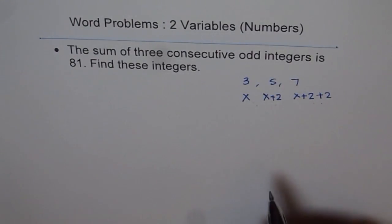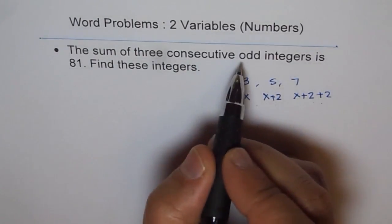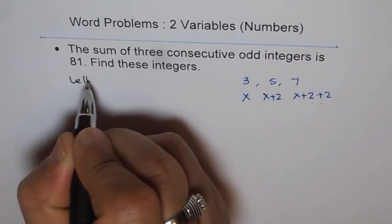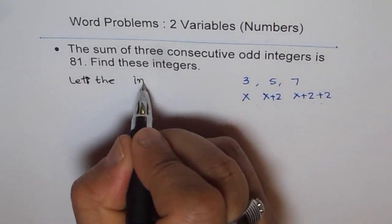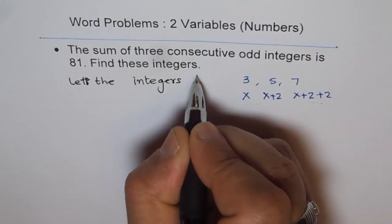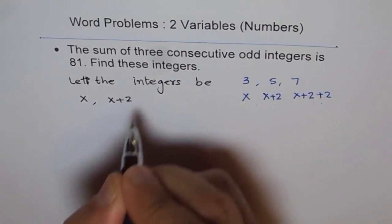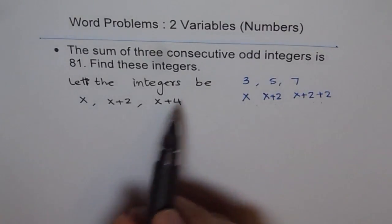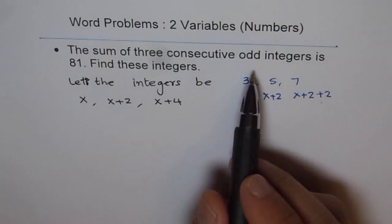So what we do is we treat it like this. We say let - now I will define the variables and you will appreciate how we can define just one variable to represent three. It says the sum of three consecutive odd integers, so let the integers be x, x+2, and x+4.